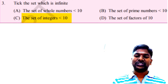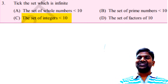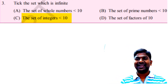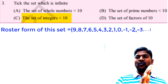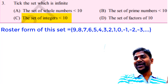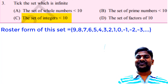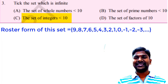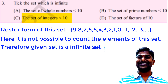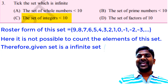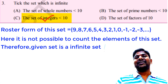The third question: the set of integers less than 10. The integers less than 10 are: ..., 9, 8, 7, 6, 5, 4, 3, 2, 1, 0, −1, −2, −3, −4, and so on. We cannot count the number of elements in this set. So it is an infinite set. We can put a tick mark on question three.